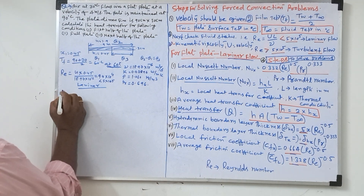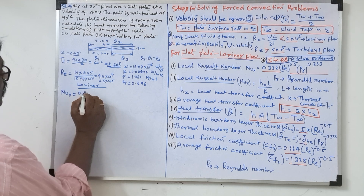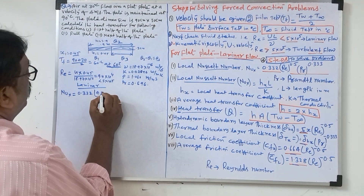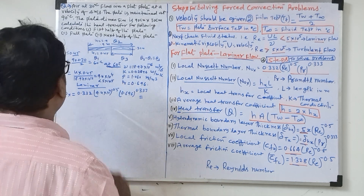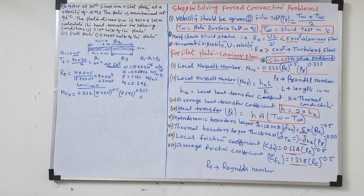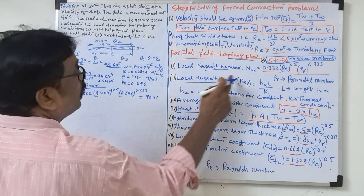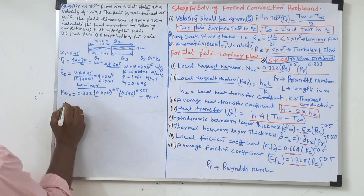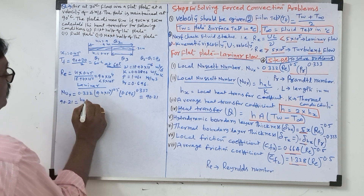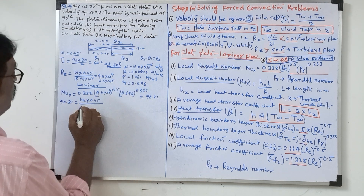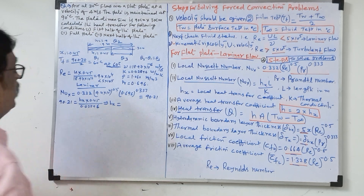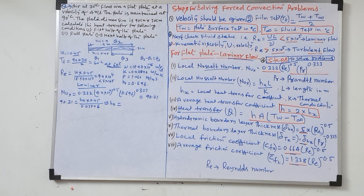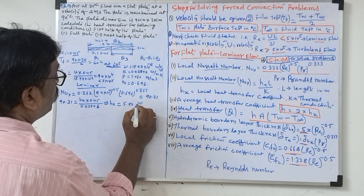Now the steps: first, local Nusselt number. The formula is already there. Using Reynolds number 9.4 into 10 power 4 to the power 0.5, and Prandtl number 0.696 to the power 0.333 — local Nusselt number value comes to 90.21. Now, local Nusselt number formula is Hx into L divided by K. So 90.21 equals Hx into 0.45 divided by 0.02896. So Hx value comes out to 5.80 watt per meter square Kelvin.